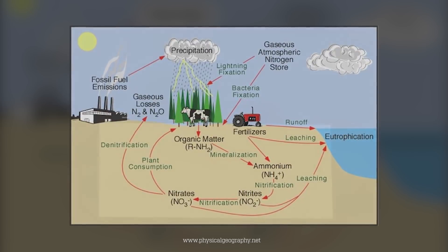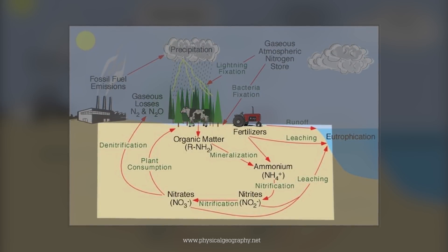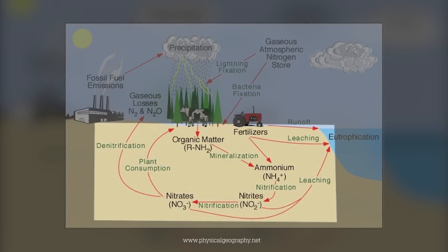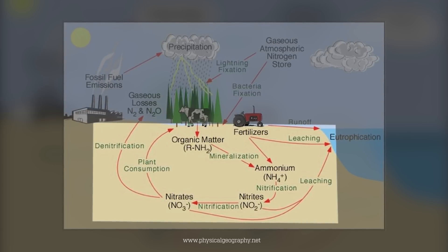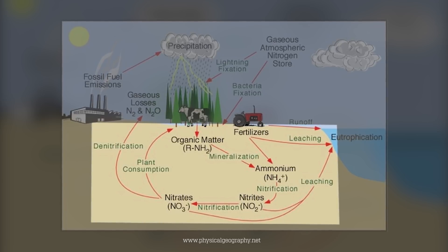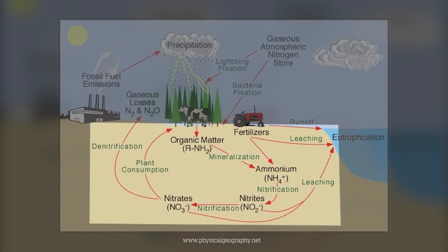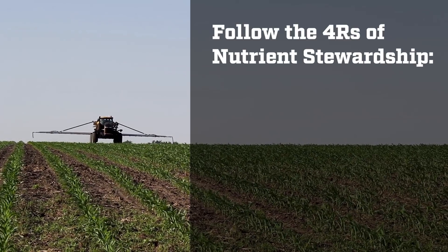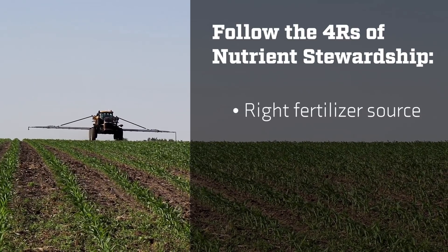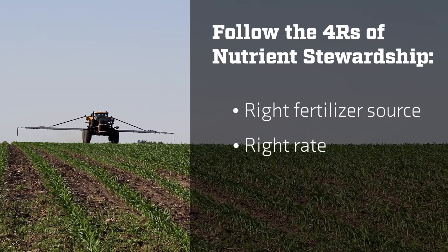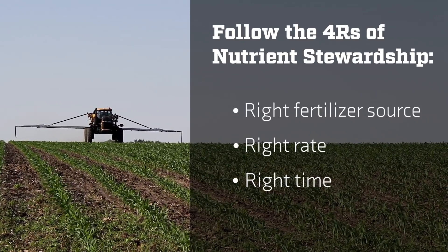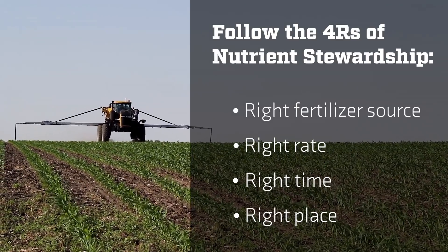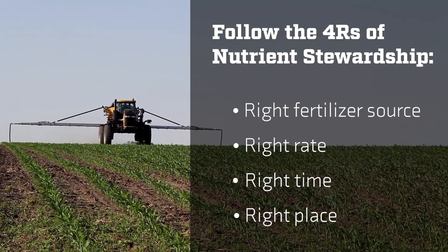What we know is that nitrogen moves through the soil profile through mass flow, which is with water. So any heavy rain in spring, flooding, will facilitate that nitrogen being lost within the soil profile. Part of the best management practices are to be more cognizant of how we apply and when we apply. There are also environmental impacts that we need to be aware of.